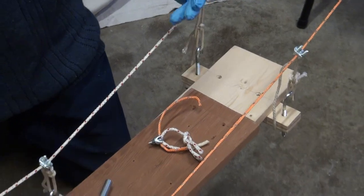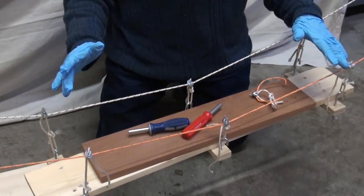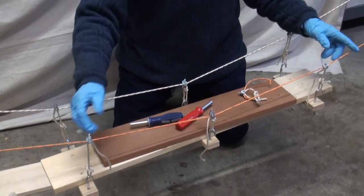Now, getting all six suspenders lined up and getting the deck level takes at least two people and takes a while. As soon as you shorten one, something else is going to change.